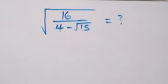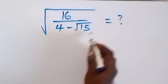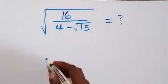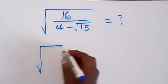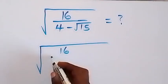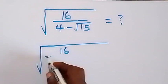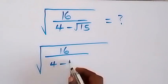Hello, you are welcome. How to solve this nice square root math problem. From here we can rationalize this and multiply with the conjugate of the denominator. So here this will become 16 over 4 minus root 15.